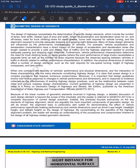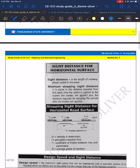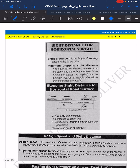We will now continue the discussion of geometric design of highways under the design element highway alignment, focusing on stopping sight distances and passing sight distances. In this video we will solve some stopping sight distance problems for horizontal road surface; passing sight distance will be solved in the next video. Sight distance is the length of roadway ahead that is visible to the driver. The minimum stopping sight distance equals the distance traveled from the time the object is sighted to the instant the brakes are applied, plus the distance required for stopping after the brakes are applied.